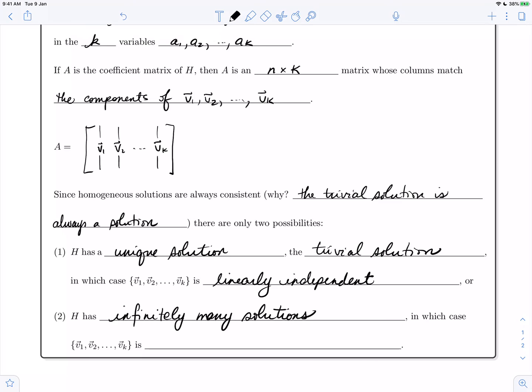If H has infinitely many solutions, it necessarily has non-zero solutions, which means the dependence equation has a non-zero solution, which means that the set of vectors is linearly dependent.